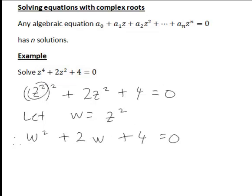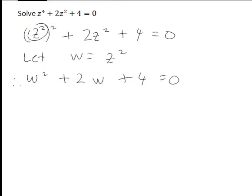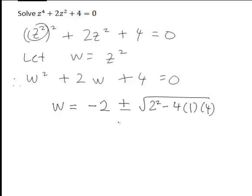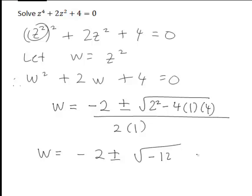The next step is to solve for w using the quadratic formula. That gives us w = (-2 ± √(2² - 4·1·4)) / (2·1), which simplifies to w = (-2 ± √(-12)) / 2.